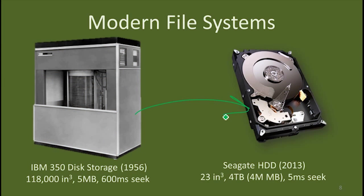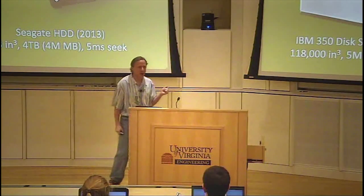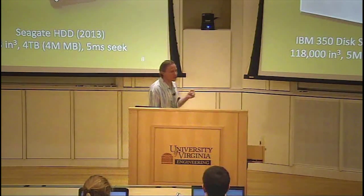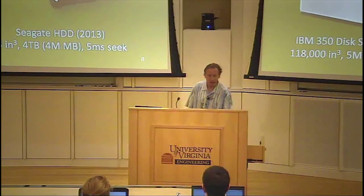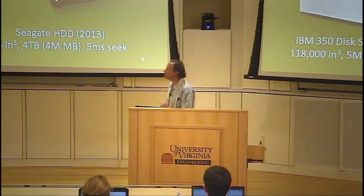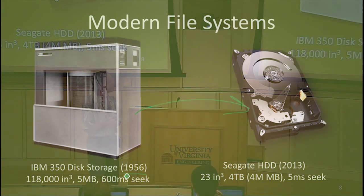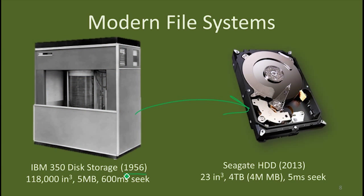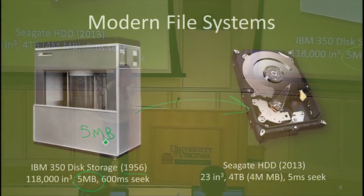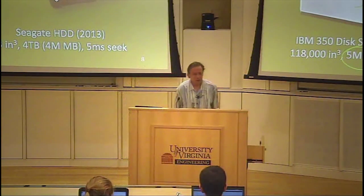The difference from 1956, when the first disk drives were coming out — it's hard to compare prices across time, but these were things that were leased for tens or hundreds of thousands of dollars a month from IBM. So you had to be a very wealthy company to afford one. You had five megabytes in the whole thing, compared to what everyone has in their laptop or desktop today: orders of terabytes. So that's an obvious thing that's different.